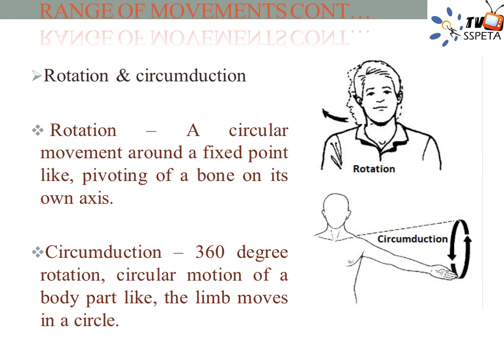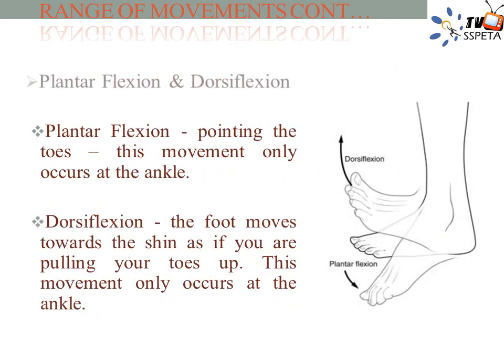Rotation — this is where the limb moves in a circular movement around a fixed joint, towards or away from the midline of the body. This occurs in the hip and shoulder joint during an overarm tennis serve. Plantar flexion — pointing the toes. This movement only occurs at the ankle, for example pointing the toes in ballet.